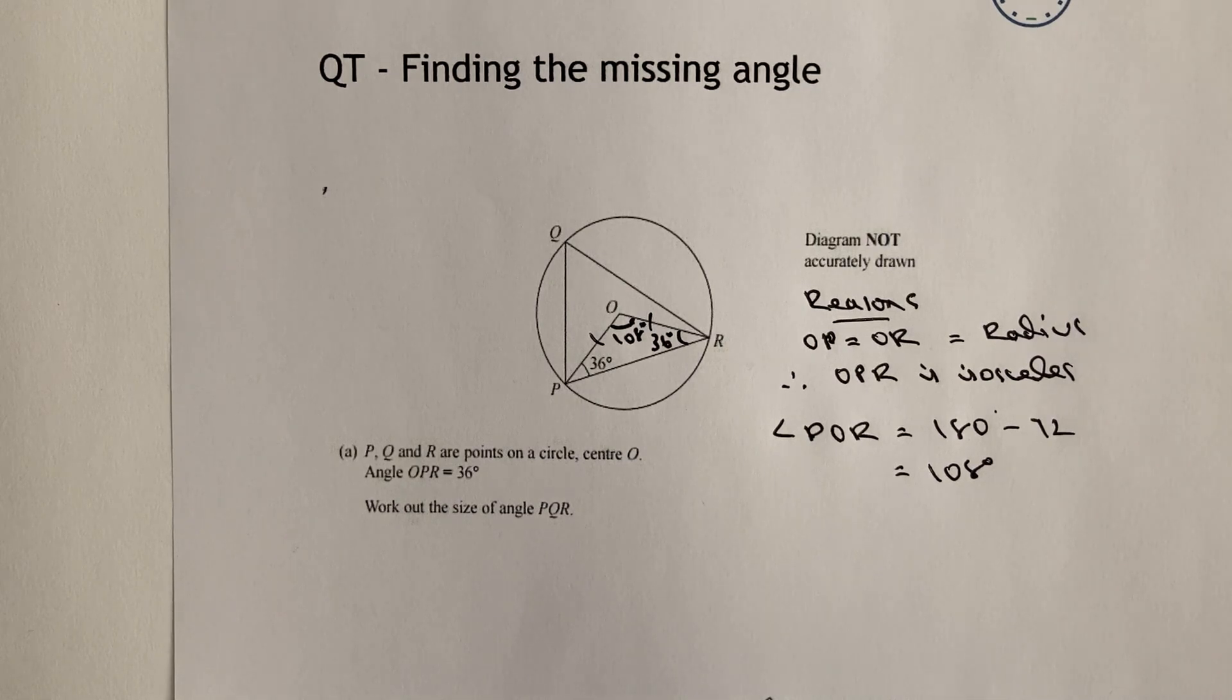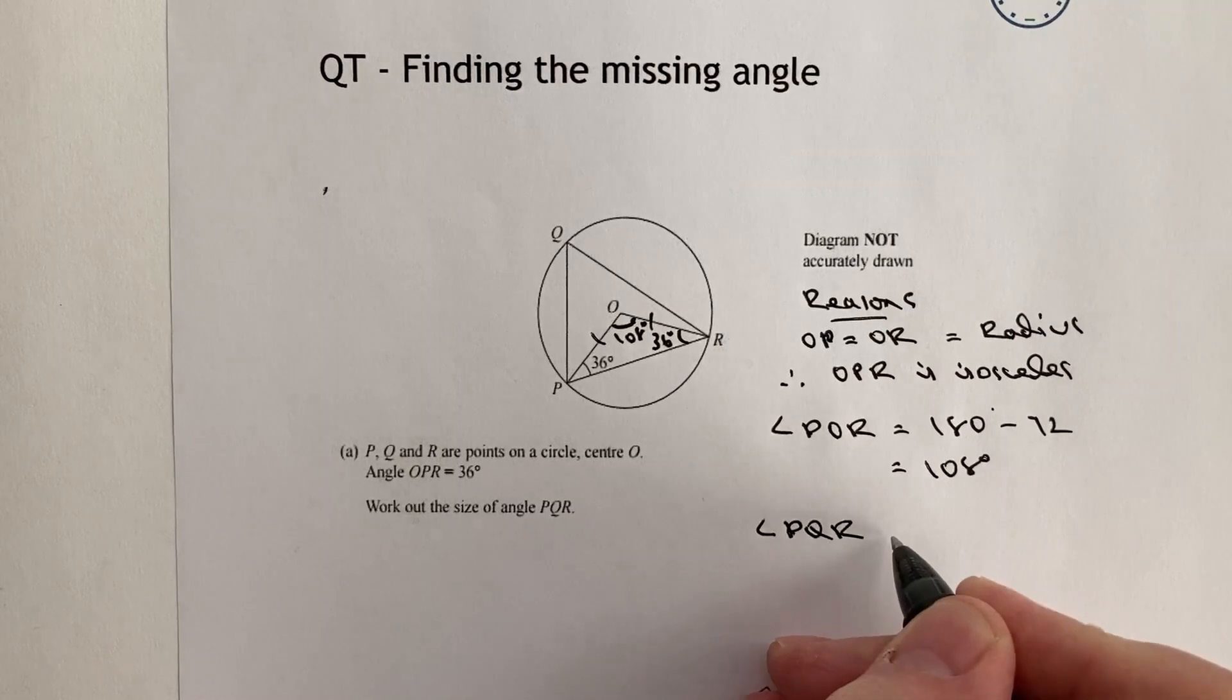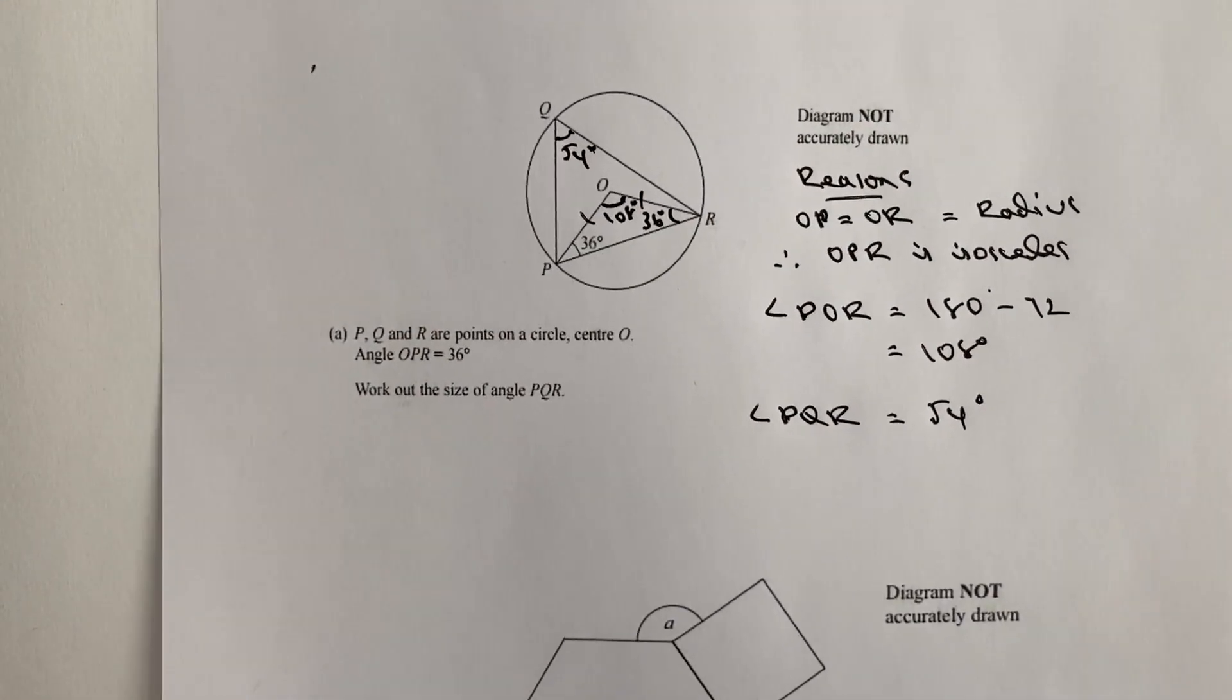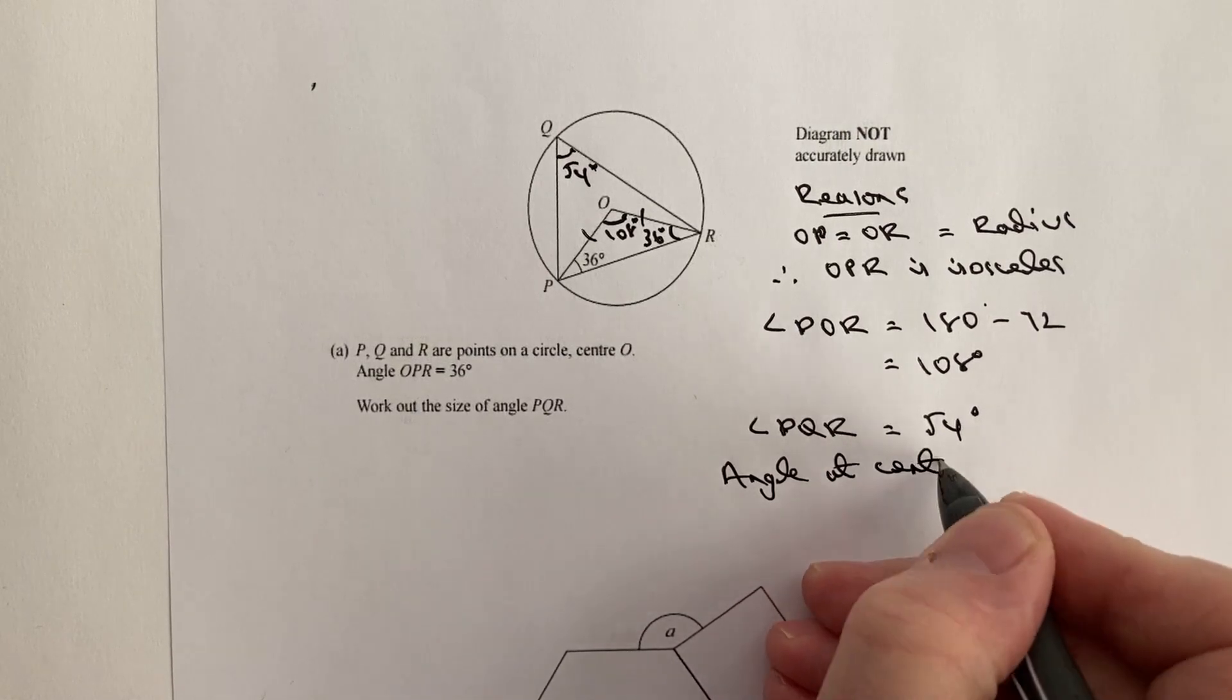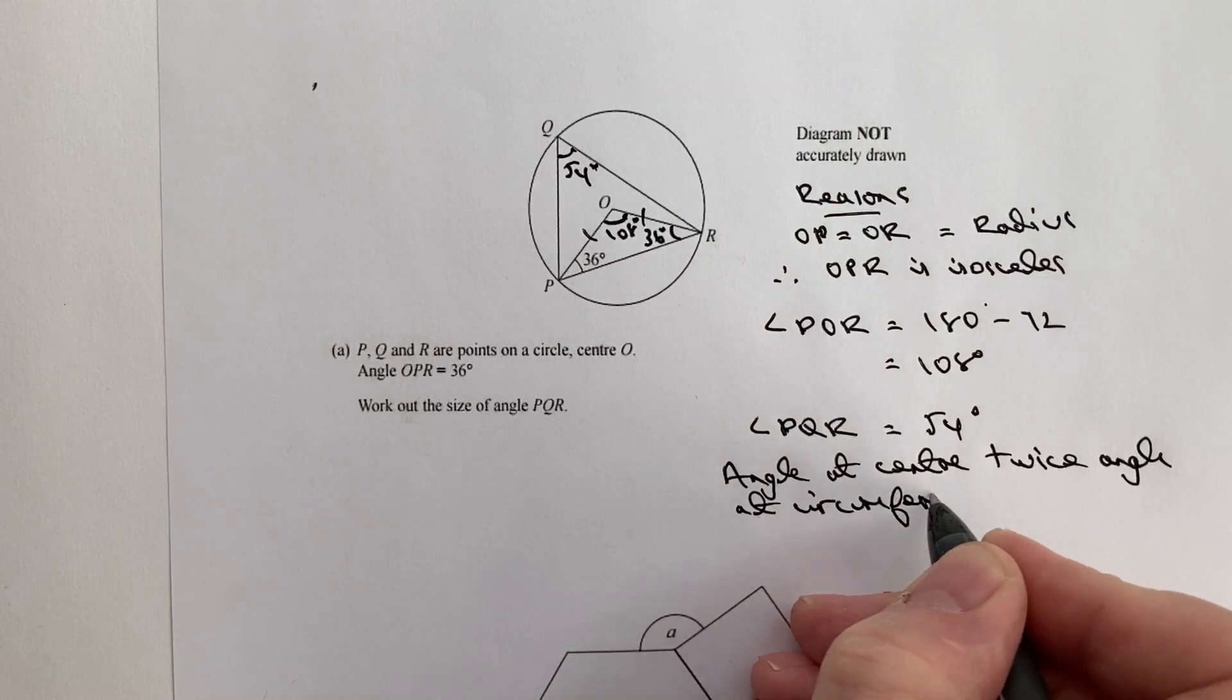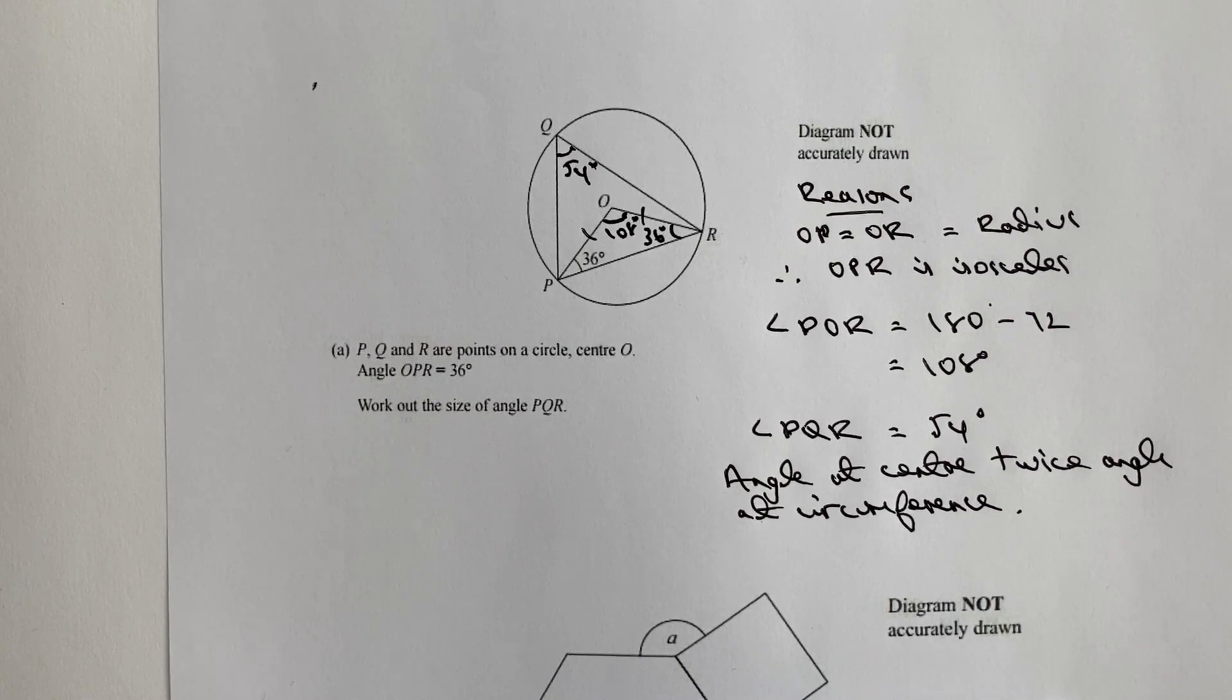Hopefully that's okay for you. If you're familiar with circle theorems and how that works then you might also spot that the angle at the middle, the center, is twice the angle at the circumference, so therefore we can say the angle PQR which is what we're looking for is going to be 54 degrees. And the reason that is, and I'll just write this in, is that the angle at the center is twice angle at circumference.